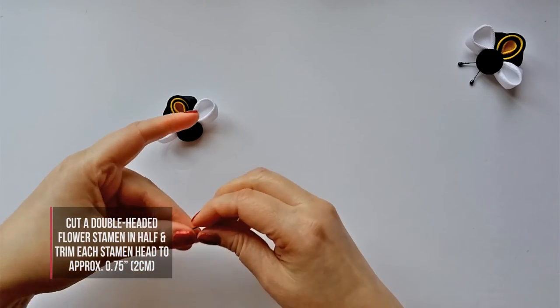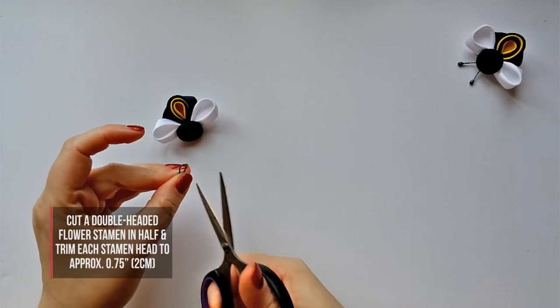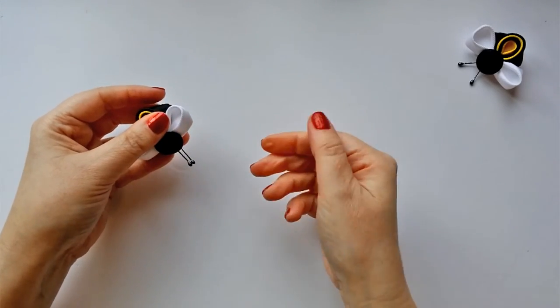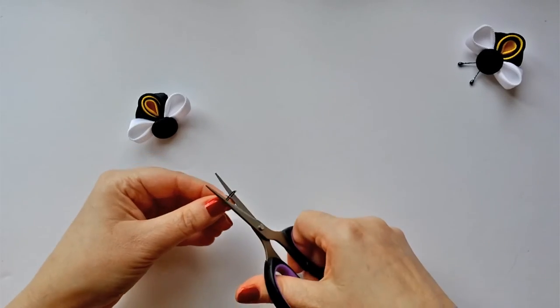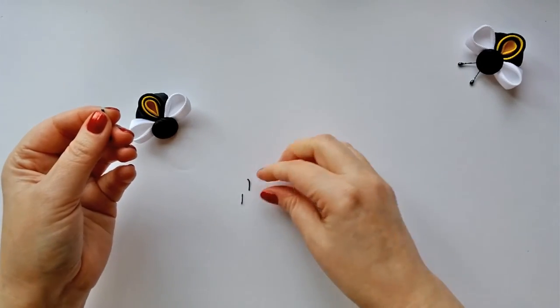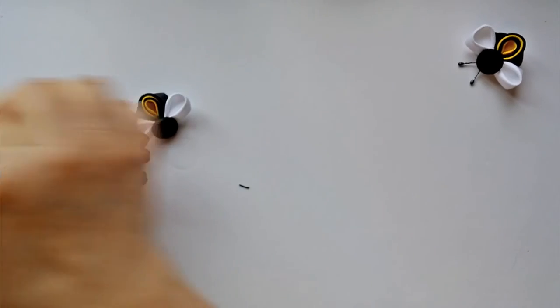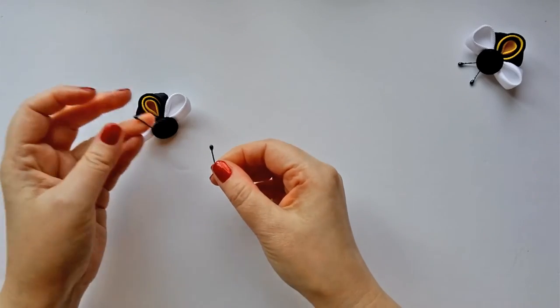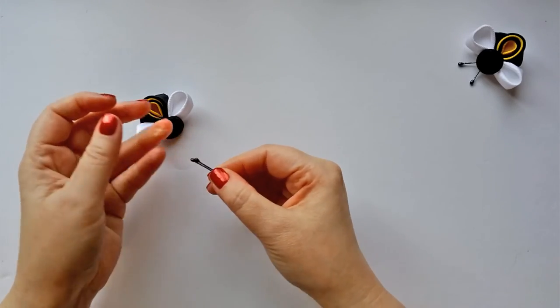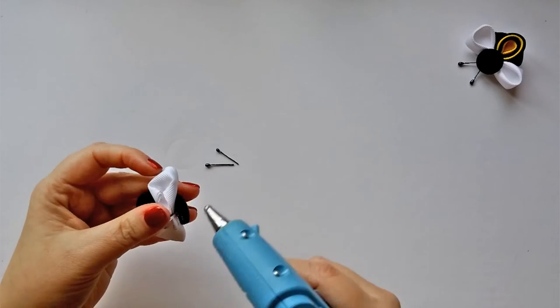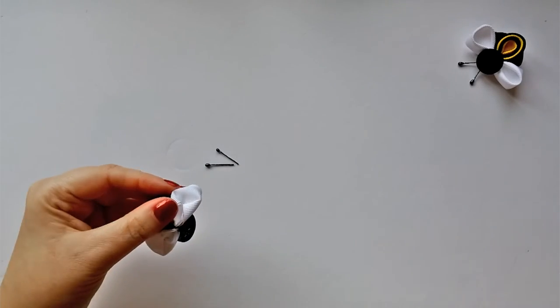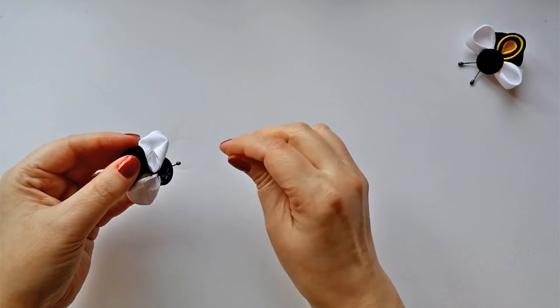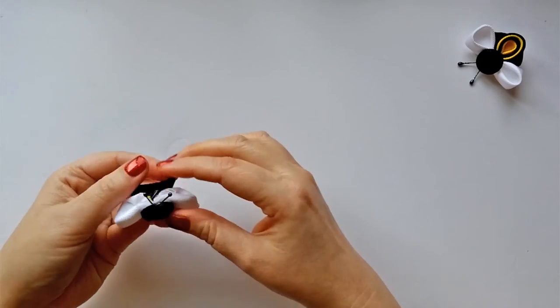Take the black flower stamen and cut it in half. Then decide how long you want your antenna to be. I like mine roughly three quarters of an inch or two centimeters so I trim them just a little. Apply a small dot of hot glue to the back of the bumblebee head and insert each antenna. Make sure that you keep them separated and that they're even and centered properly.